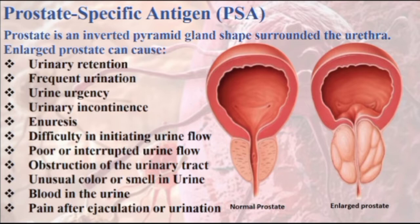Prostate specific antigen, or PSA, is produced in the prostate and secreted into the semen, and small amounts of PSA usually circulate in the blood.